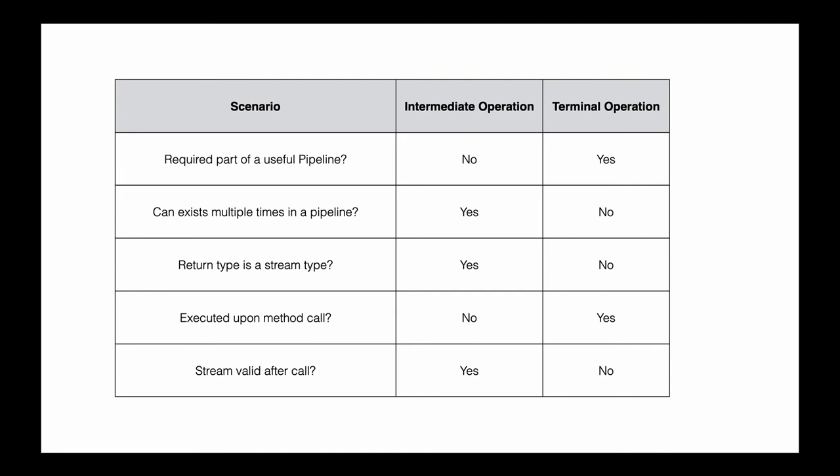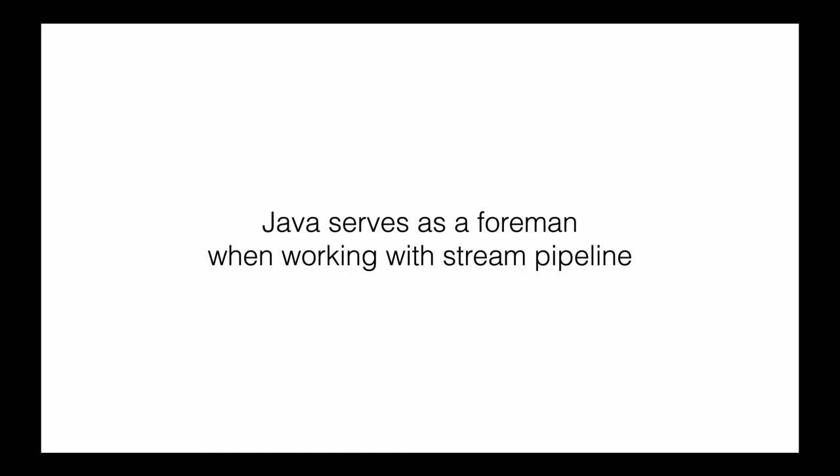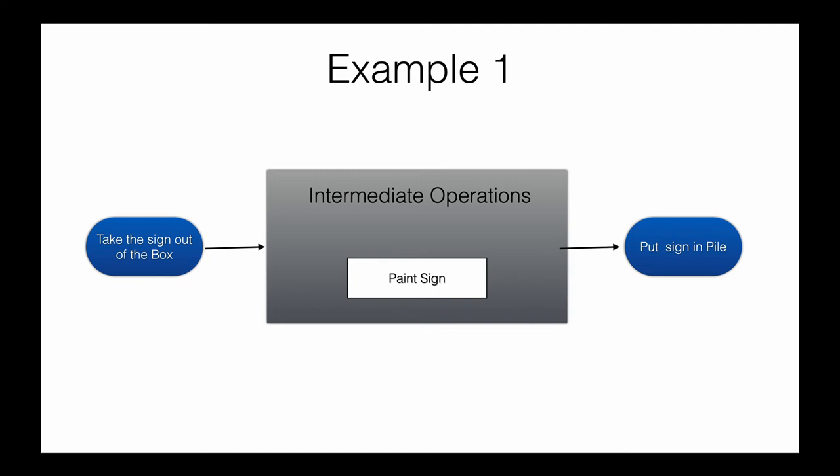In factories, a foreman organizes the pipeline and the work being done on it. In programming, Java serves as the foreman when working with a stream pipeline. Let's look at a couple of examples to see what duties Java performs when we work on streams.